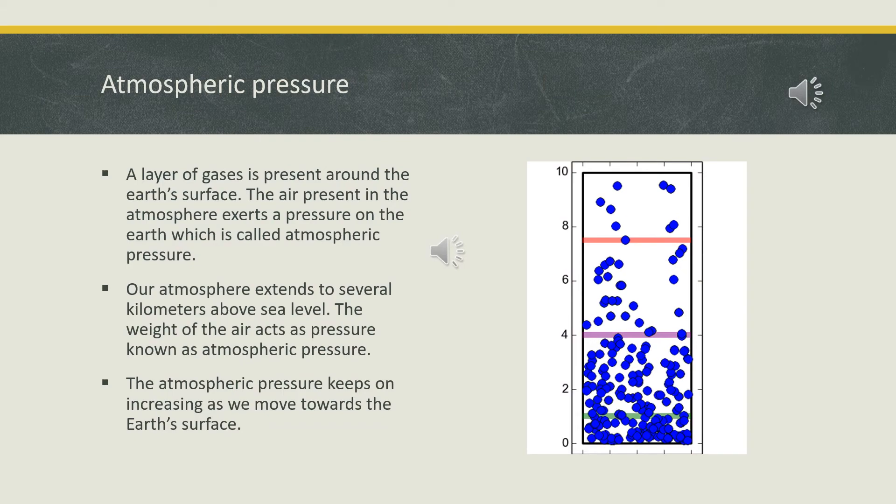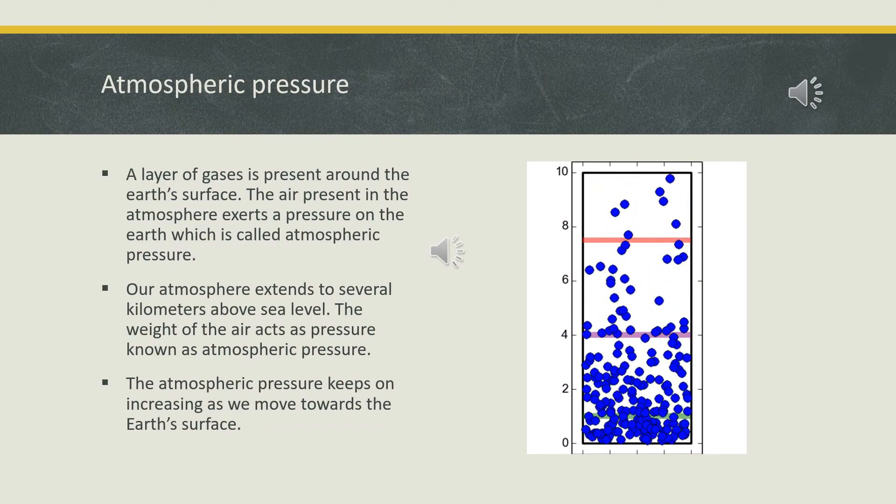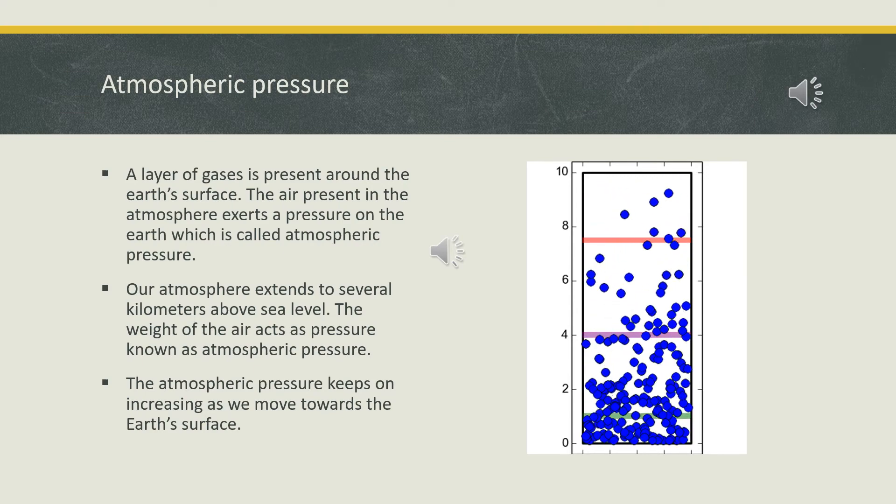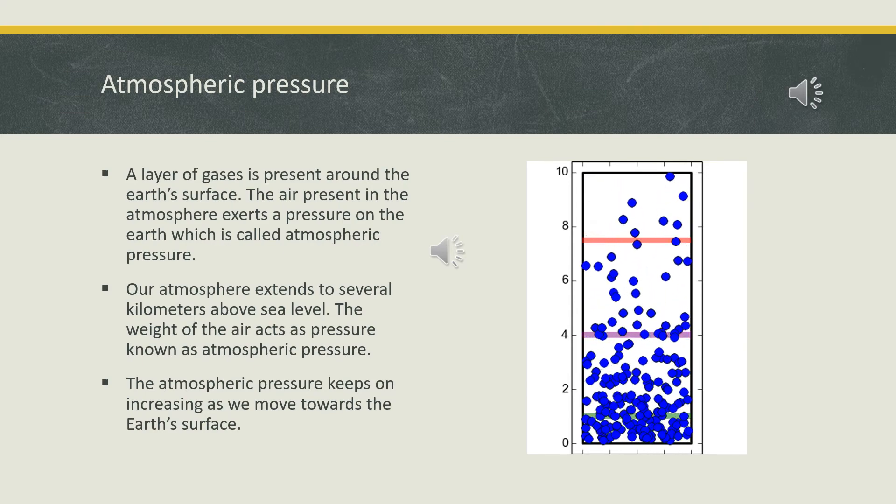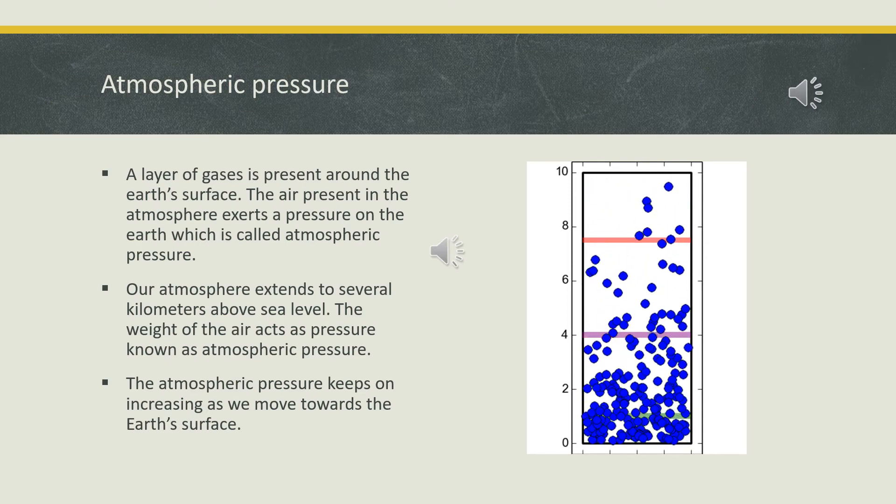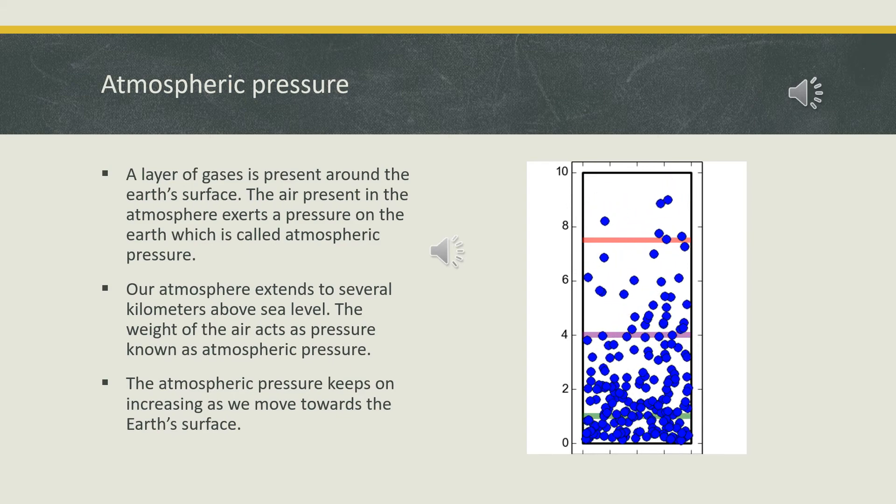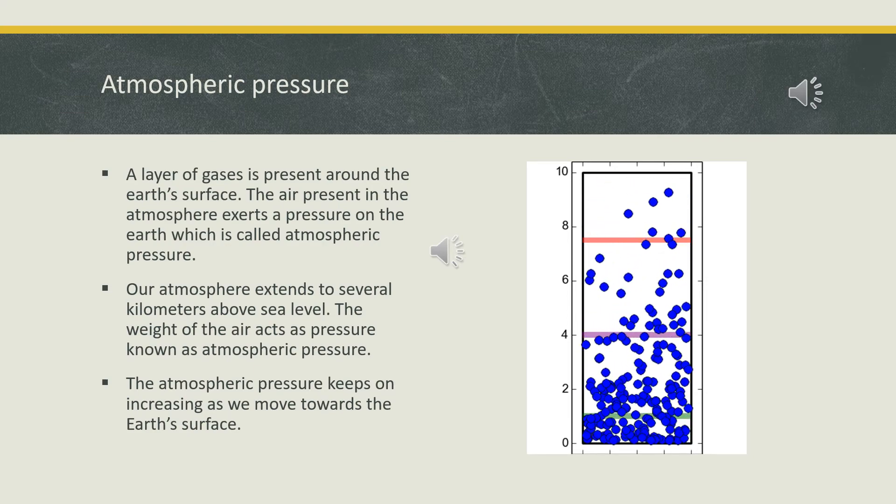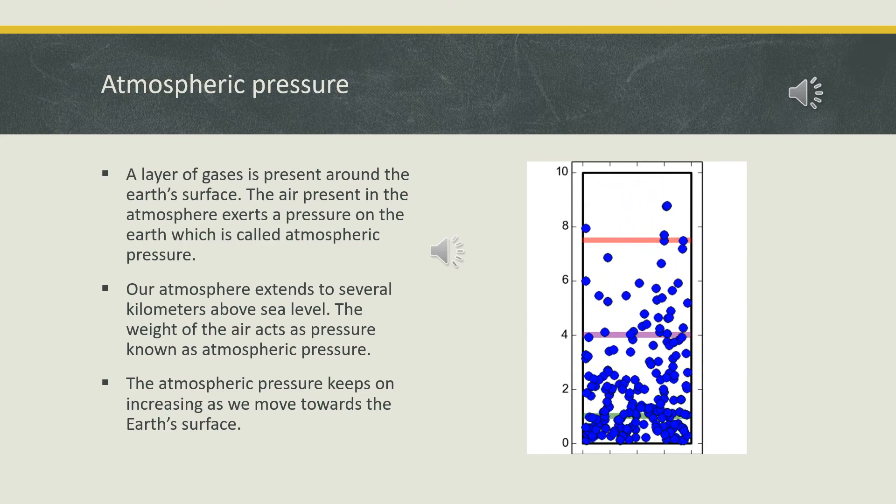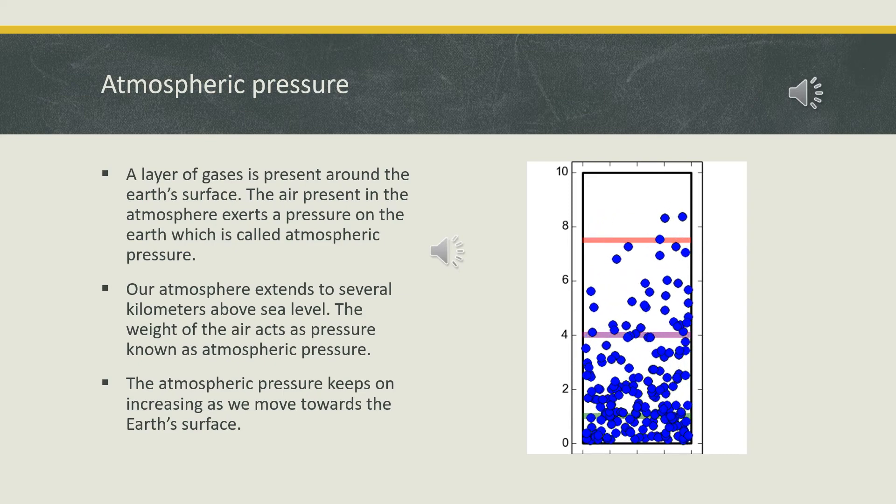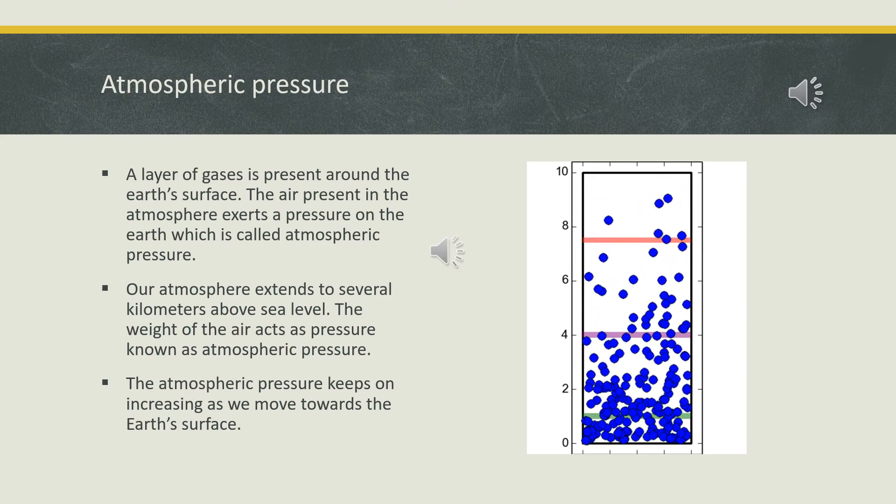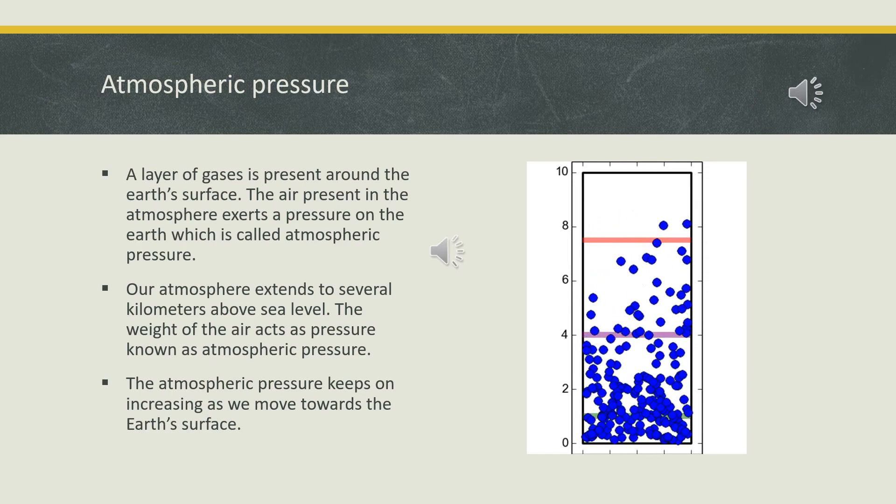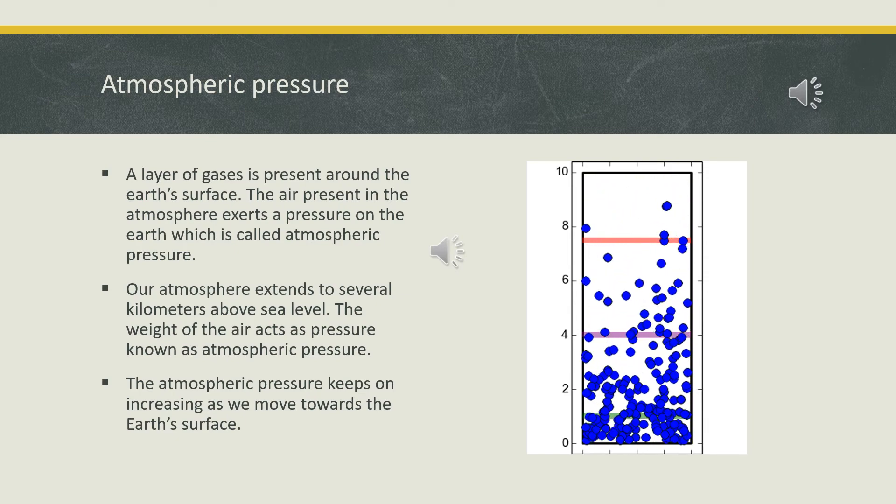Our earth is surrounded by a layer of air called the atmosphere. This atmosphere exerts pressure on all objects. The pressure exerted by the weight of the air on an object is called atmospheric pressure. The air in the atmosphere reaches up to a height of nearly 30 kilometers, exerting a lot of pressure on the earth. Have you ever wondered why we don't get crushed under this weight? The reason is that the pressure exerted by our body is equal to the pressure exerted by the atmosphere on our body. This nullifies the effect of atmospheric pressure.